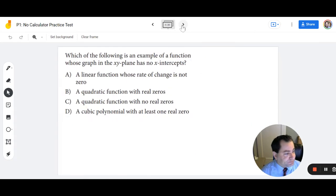Number 4. Which of the following is an example of a function whose graph in the xy plane has no x-intercepts? So no x-intercepts means there's no intersection point. So a linear function whose rate of change is not 0, that's not true. A quadratic function with real zeros, that is the definition of an x-intercept, so that's not it. A quadratic function with no real zeros, so the opposite in C would be the answer.